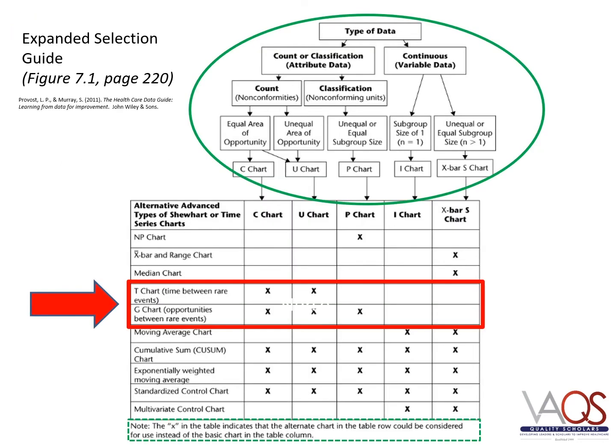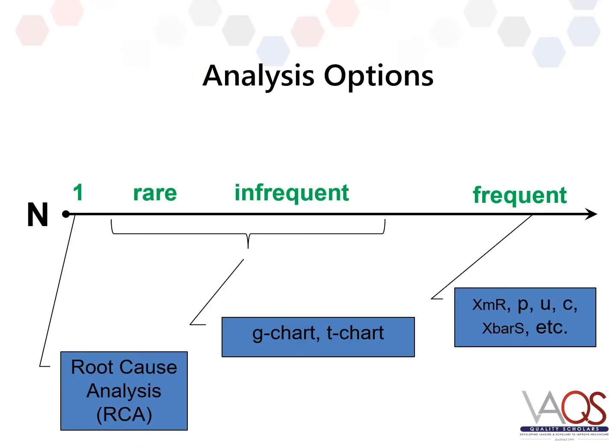In this mini-module, we will depart from standard SPC analysis approaches, which are designed for the statistical assessment of frequent events, and focus on a category of SPC analyses reserved for use in situations where the event rate is infrequent or rare. Standard SPC analyses for frequent events include commonly used approaches such as the XMR and P-Chart. The approaches we'll focus on today include the T-Chart for time between rare events and the G-Chart for opportunities between rare events, shown in the red box.